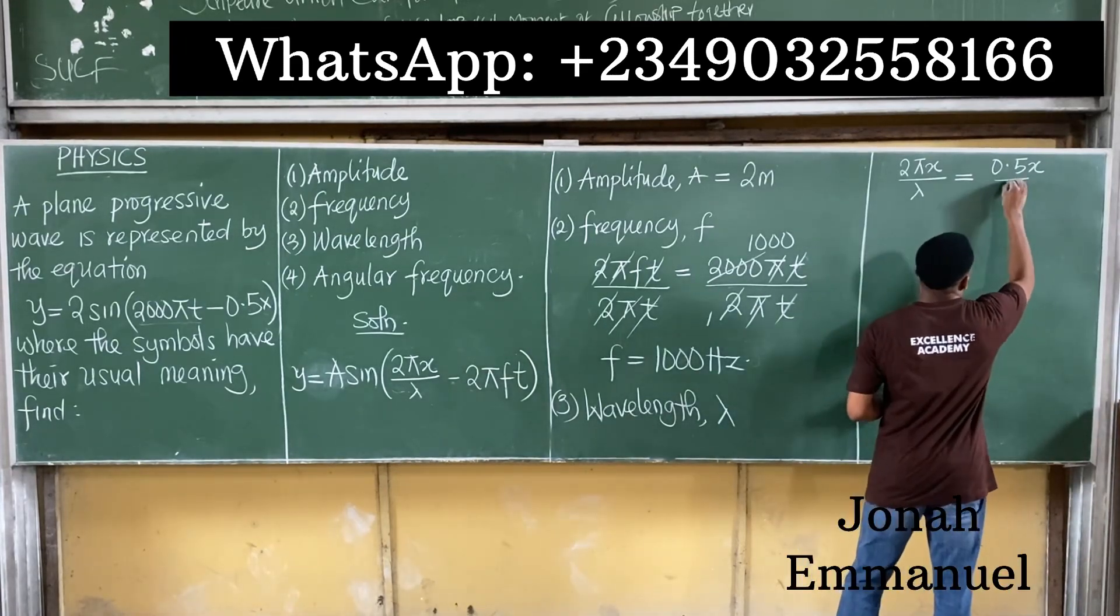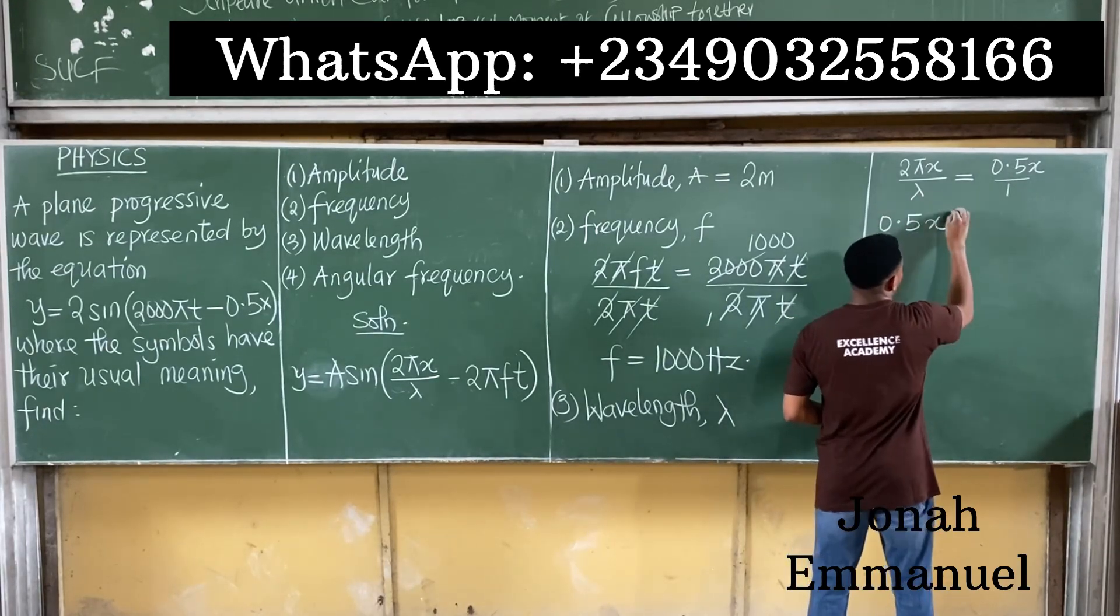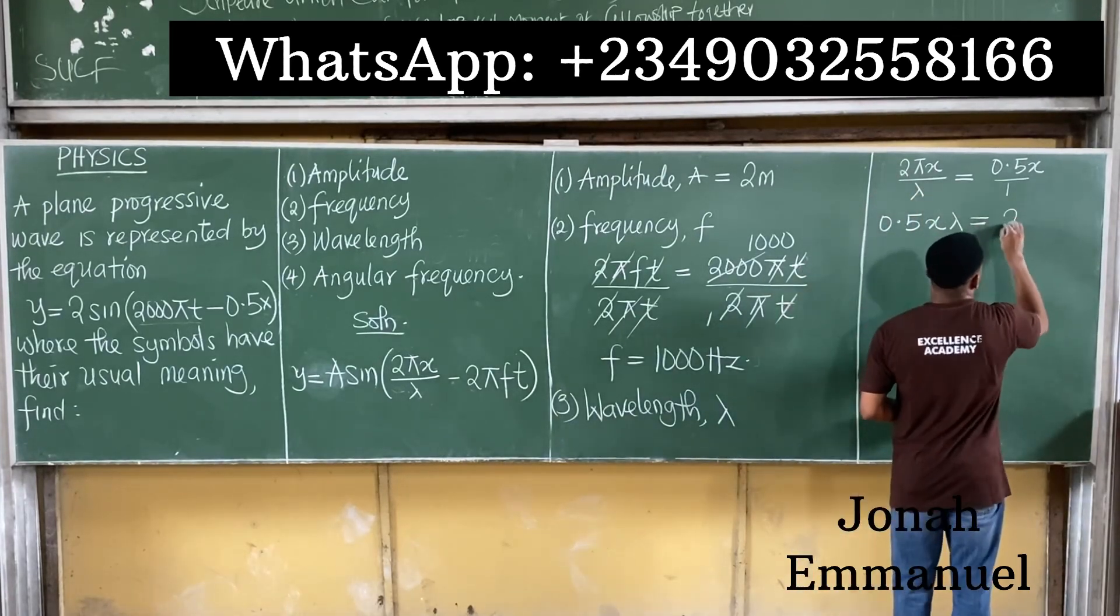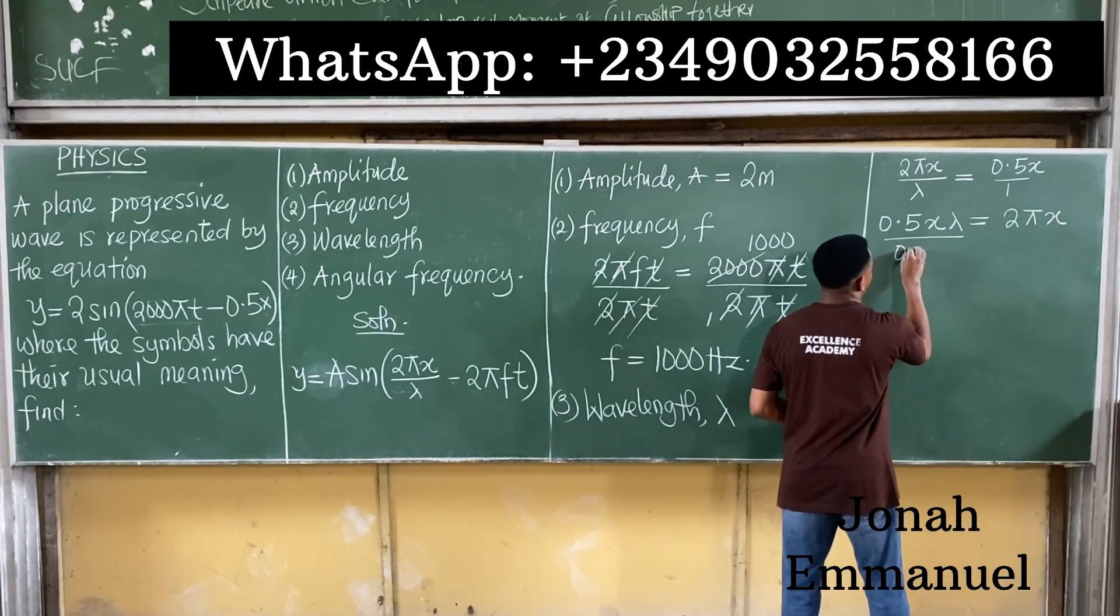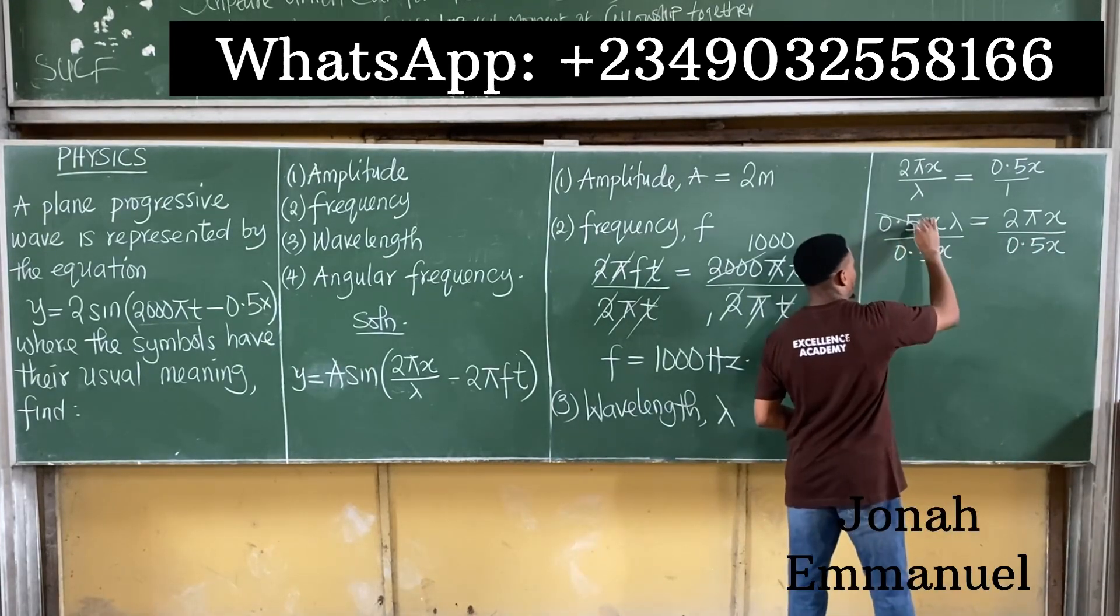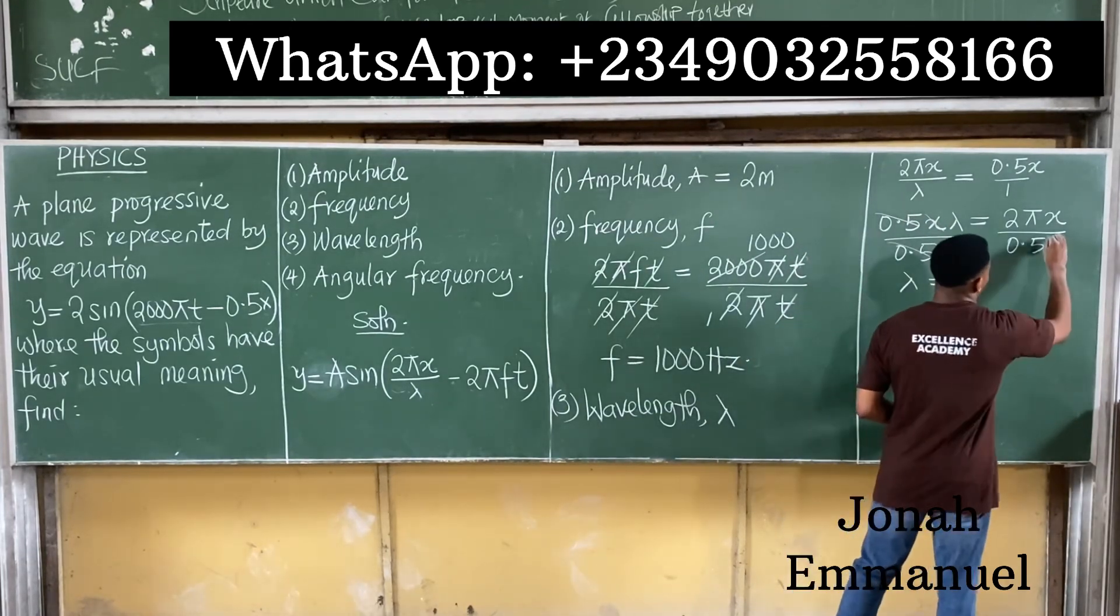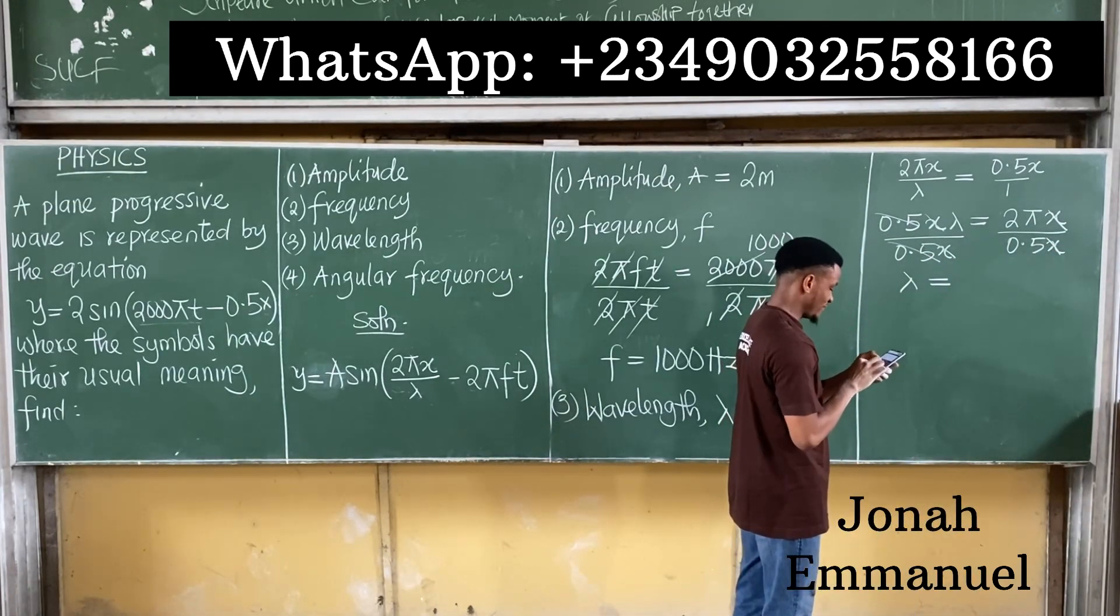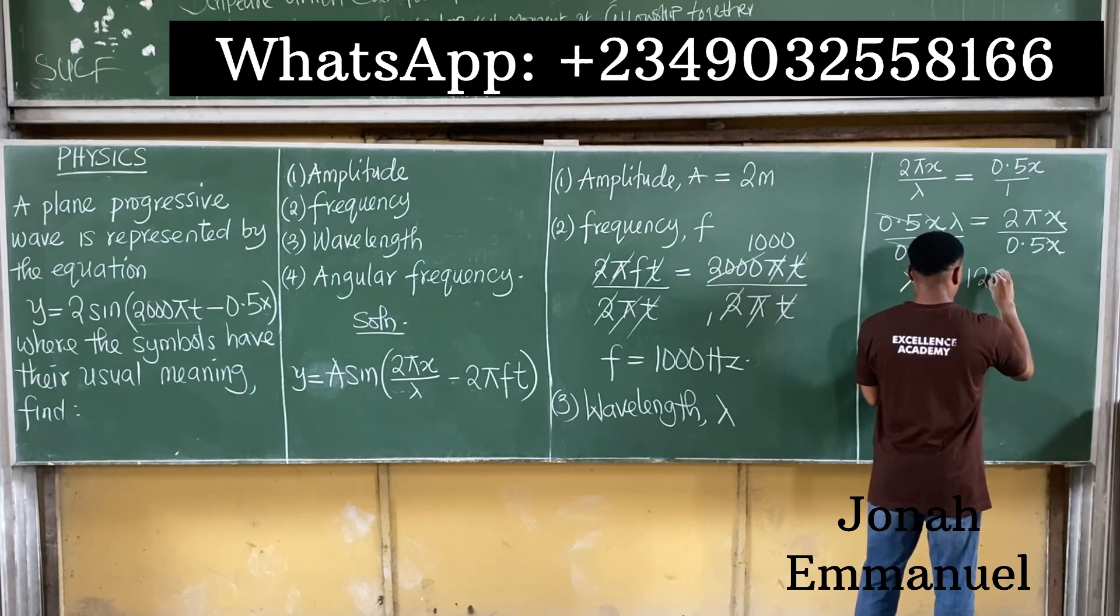My first step is to cross-multiply. This times this gives you 0.5 × x × λ. So 0.5xλ is equal to 2πx times 1 gives you 2πx. To get lambda, I'll divide here by 0.5x. Divide here by 0.5x. 0.5 cancels 0.5, x cancels x. So lambda wavelength is equal to x cancels x. This should be about 4π.